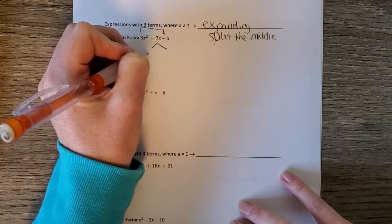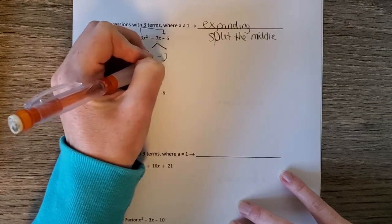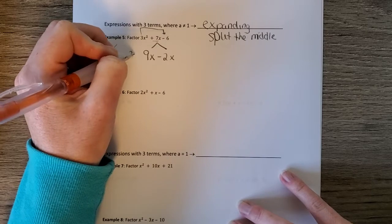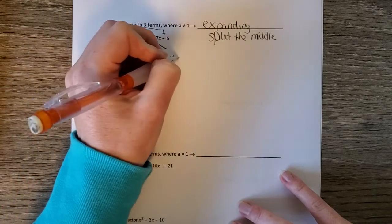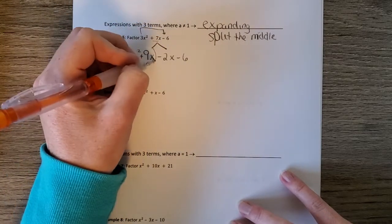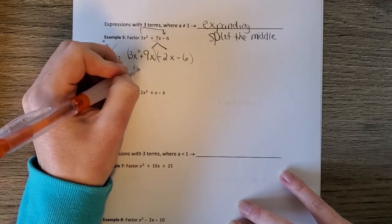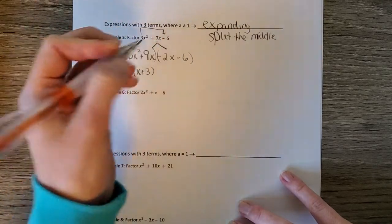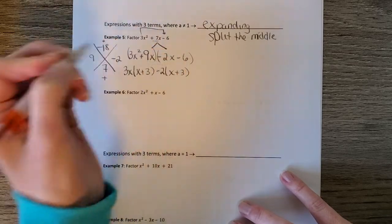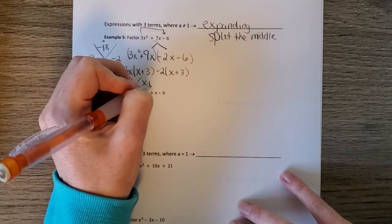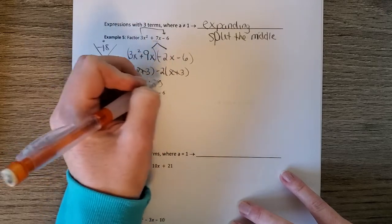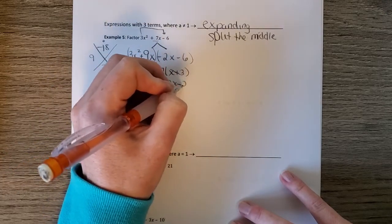So again, we split the middle, replace 7 by 9x minus 2x. The beginning stays the same. The end stays the same. And now we do our grouping from the previous page. So we factor out the 3x and we get x plus 3. And we factor out a negative 2, we get x plus 3. And then we GCF of x plus 3. And we get 3x minus 2.